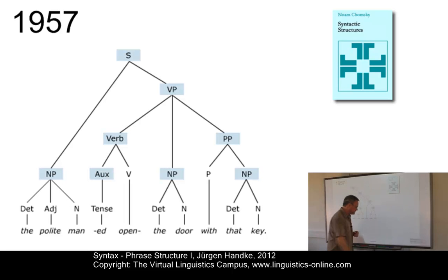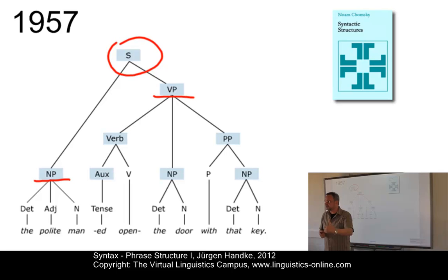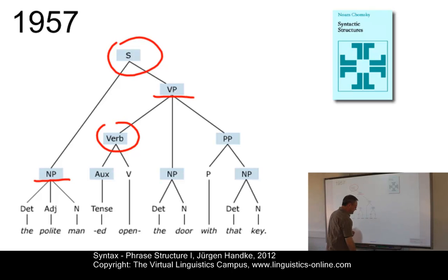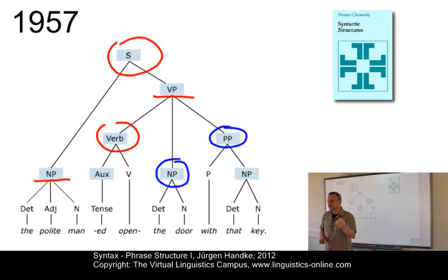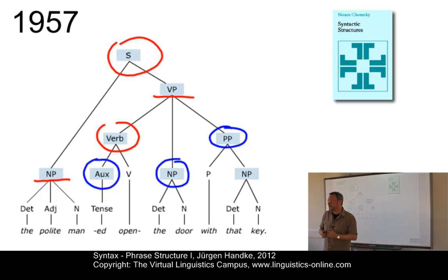Let's look at the central properties of the 1957 system. S, which stands for sentence, is the highest category. It consists of two central categories: the noun phrase and the verb phrase. The verb phrase itself consists of the verbal complex — the verb itself — and all optional and obligatory elements associated with it, with no distinction drawn between optional and obligatory elements such as adjuncts and complements. The auxiliary part in this model exhibits all grammatical aspects associated with the verb: tense, aspect, modality, etc. This is not too remote from what we have today.